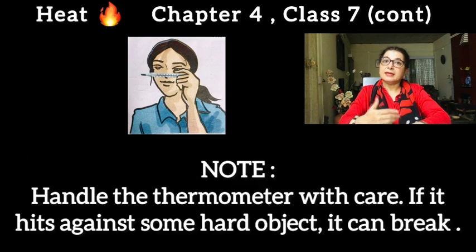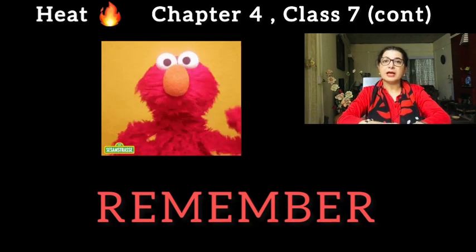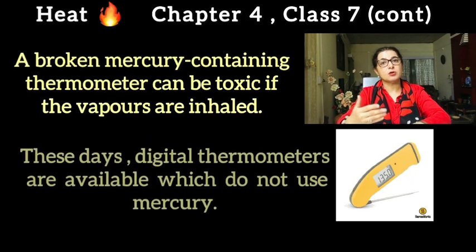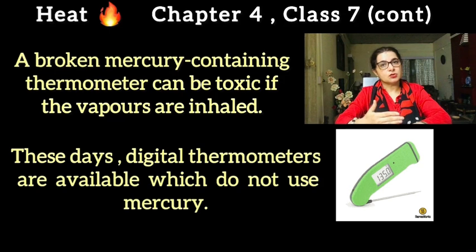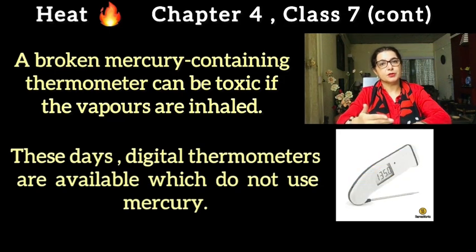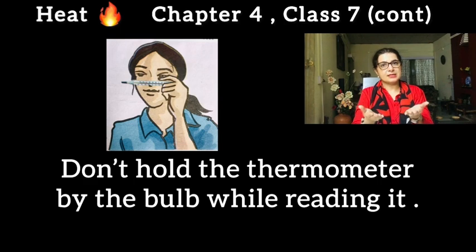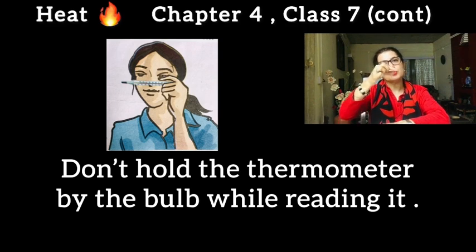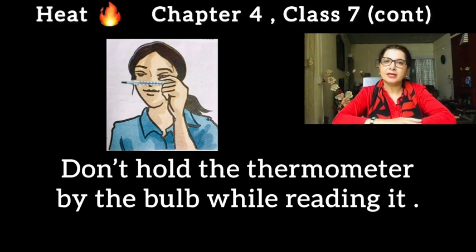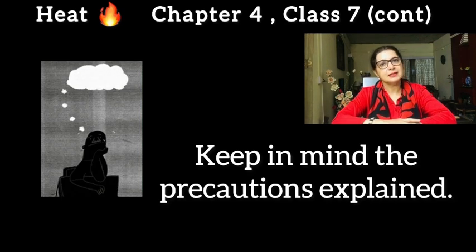Another precaution when jerking the thermometer to bring mercury below 35 degrees centigrade: be careful not to hit it against a hard surface, because it is made of glass and can break. Also, mercury is very toxic and harmful — contact with mercury can be really dangerous. Additionally, when taking the thermometer out to read the temperature, be careful not to hold or touch it from the bulb end.